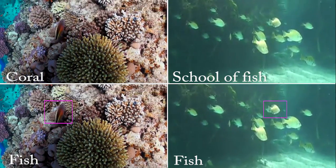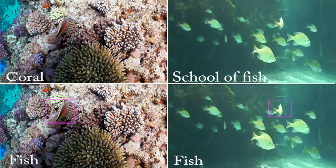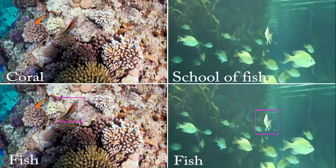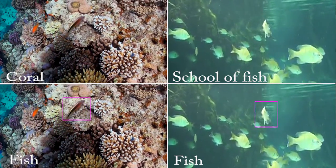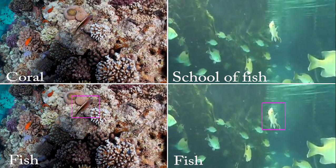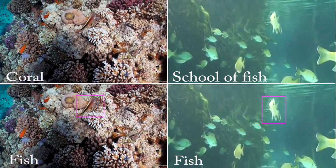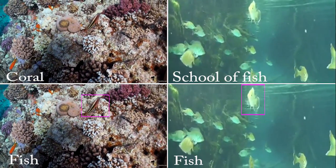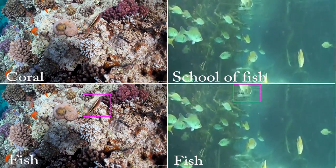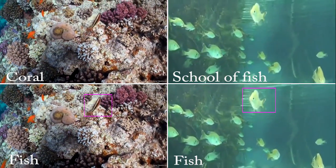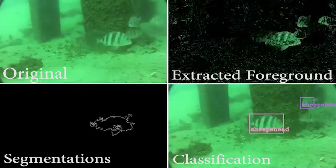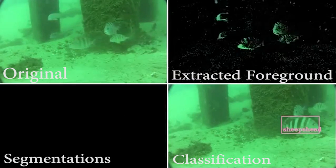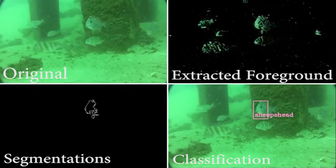For this answer, we will focus on the application we began constructing as part of our project: a fish classifier. Without extracting the foreground, our neural network-based classifier may recognize only the scene and classify it too broadly. However, once we extract and segment the foreground, we can begin classifying individual fish.